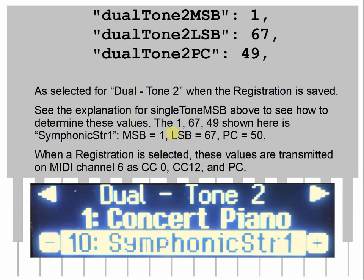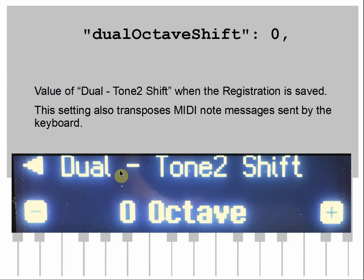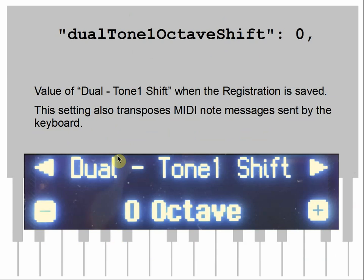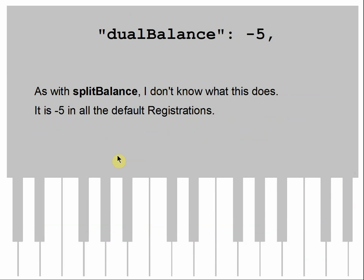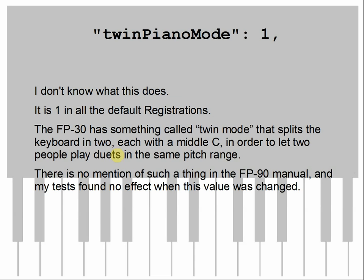Dual tone is the second tone if you're in dual mode, similar to the single tone settings. Dual tones are sent on channel six. The dual octave shift is the octave shift for dual tone two and also transposes MIDI note numbers. Octave one is the main tone octave shift. Dual balance — just like split balance — no idea what it does, and it's minus five in all the defaults. Twin piano mode is another mystery; it's one in all the default registrations and nothing in any of the manuals explains it. The FP30 manual describes a twin mode that splits the keyboard in two each with a middle C, but there's no mention on the FP90 and it didn't seem to do anything.